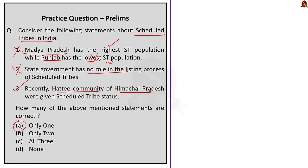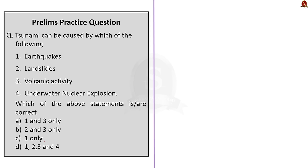The second question: which of the following are causes of tsunami? As we saw in the discussion, earthquakes, landslides, volcanic activity, and underwater nuclear explosions are all causes of tsunami. All four phenomena are causes of tsunami. The correct answer is option D.